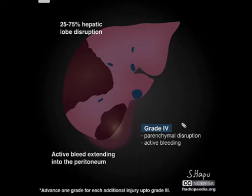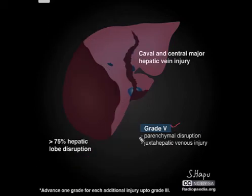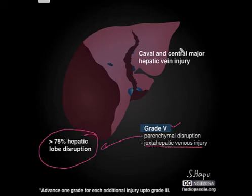This is grade 4. Here the hepatic lobe disruption is about 25 to 75 percent, and there can be active bleeding extending into the peritoneum. This is grade 5. The parenchymal destruction is more than 75 percent, and there is hepatic venous injury involving the caval and central major hepatic veins.